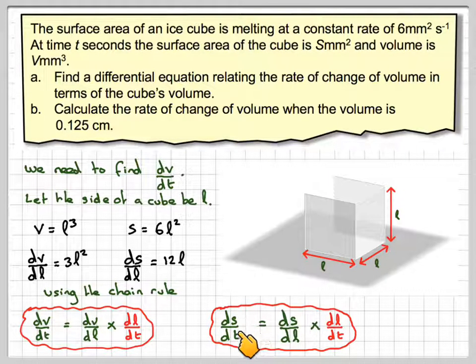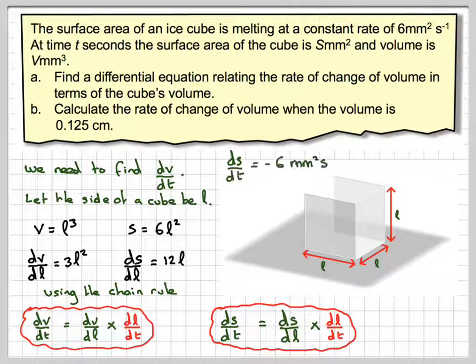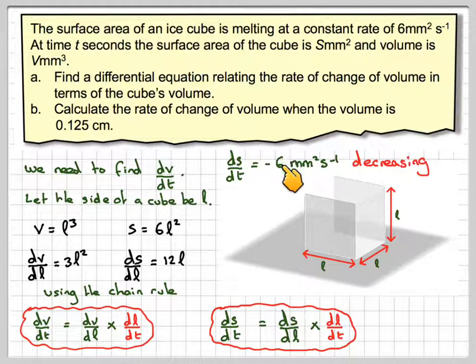Now we do actually have ds/dt because we're told that the cube melts at a constant rate of 6 mm² per second. It's minus 6 because the area is actually decreasing.